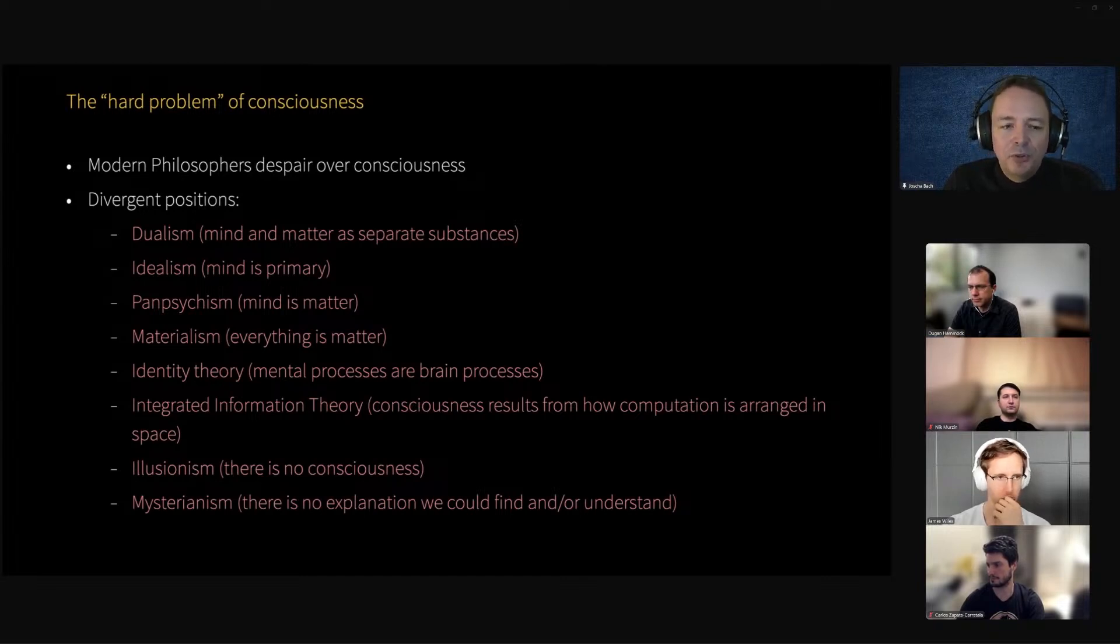There are a number of divergent positions, for instance, dualism, the idea that mind and matter are entirely separate substances that need to interact somehow, which is somewhat problematic because matter is defined in physicalism by the sense that it's basically the causally closed processes of physics. It's not entirely clear how the mind would interact with it.